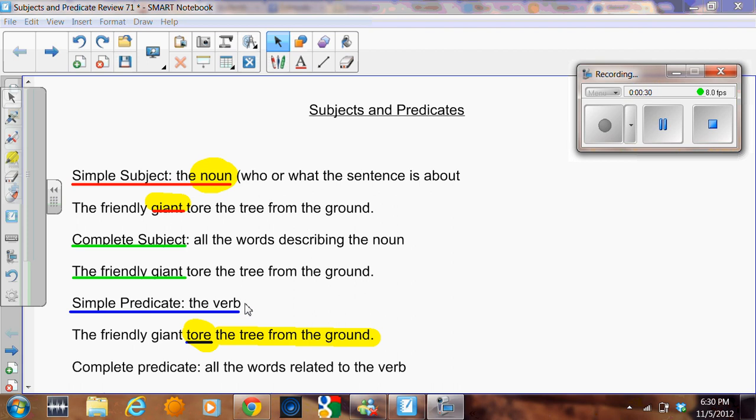The simple predicate is the verb in the sentence, the action that the main noun is performing. In this case, it's tore.